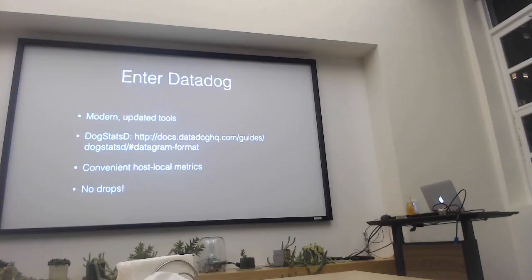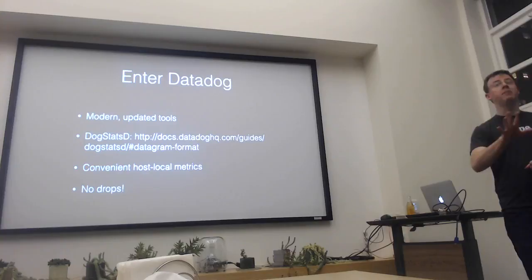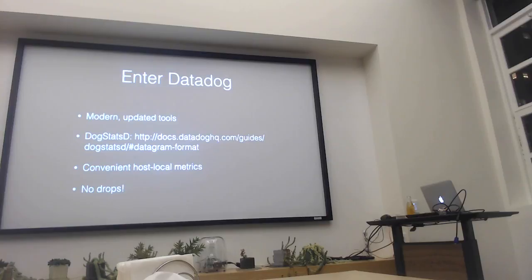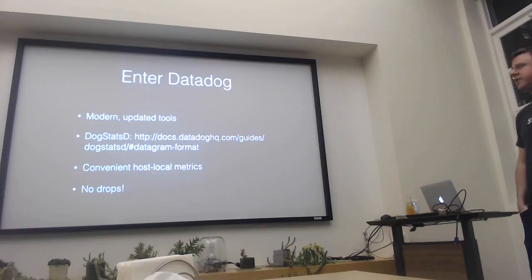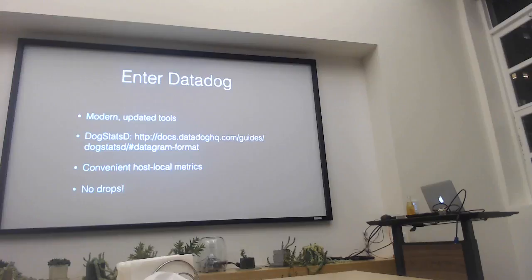DogStatsD, which is conveniently shipped with the agent installed on every Datadog machine, is written in Python. It's fine until it isn't — and then you sort of hit this really bad drop-off where you start to drop packets and burn a ton of CPU. So we got some cool upsides from this. The convenient host-local stuff solves a scaling problem, because all your metrics are now coming just on the host. It's a lot easier to spray UDP packets from one machine to itself, and on the loopback device, there are no mysterious MTU problems.